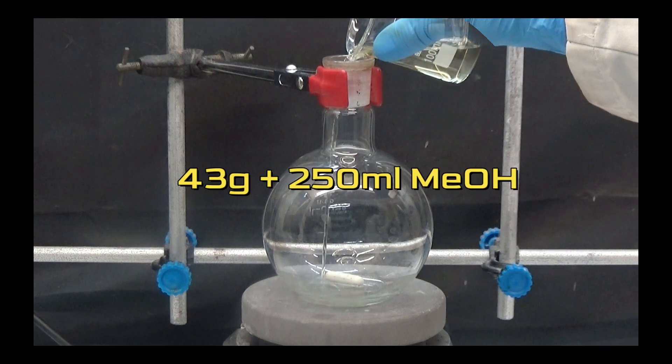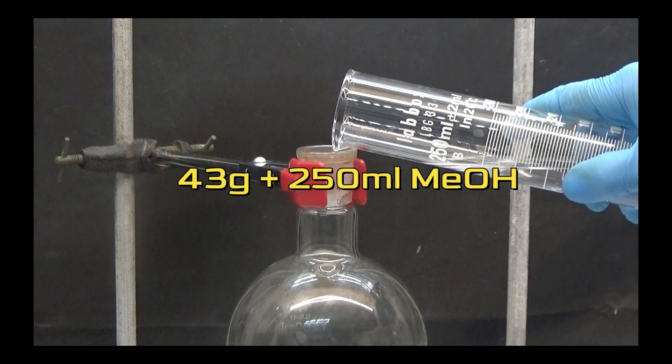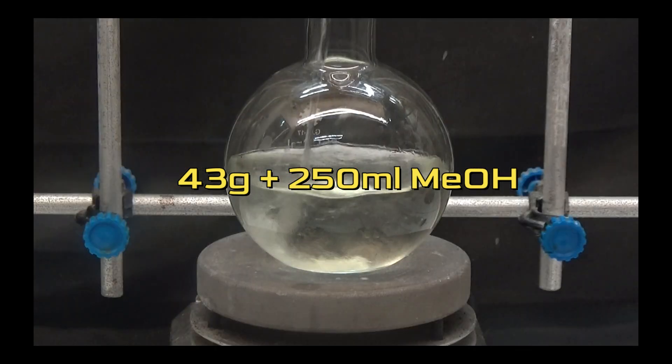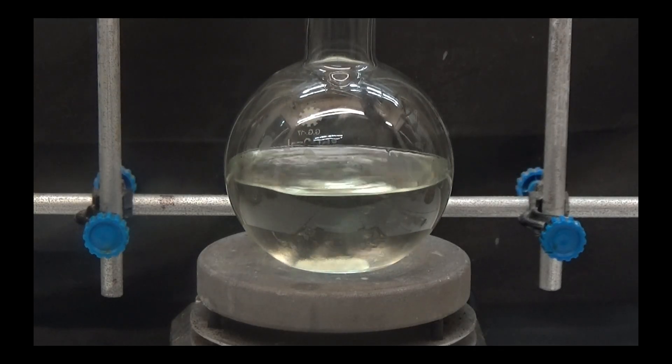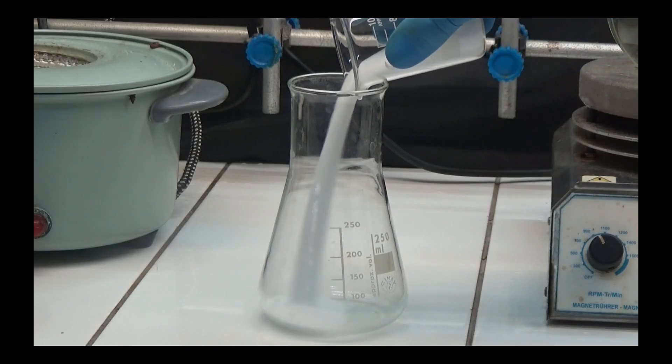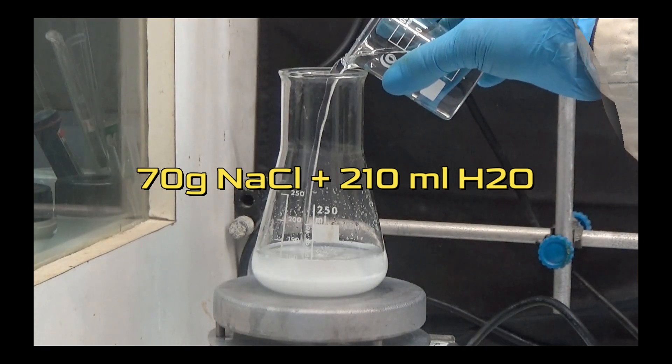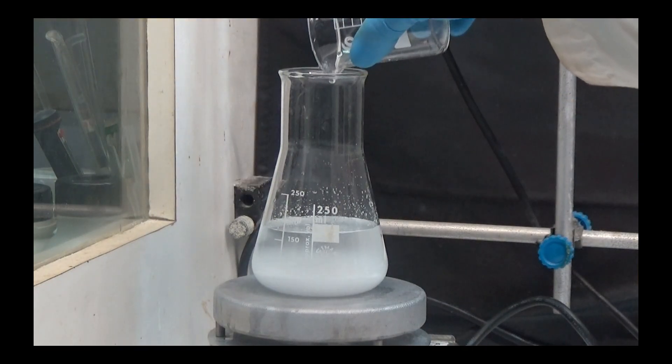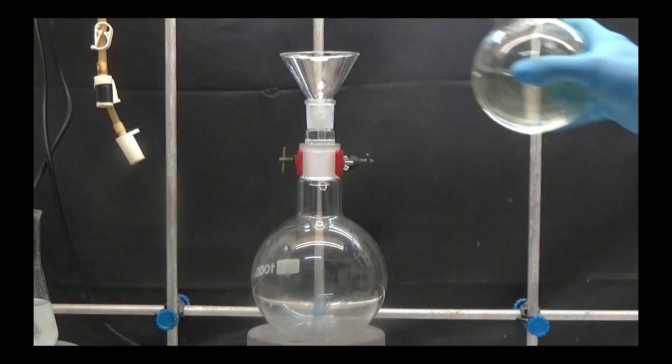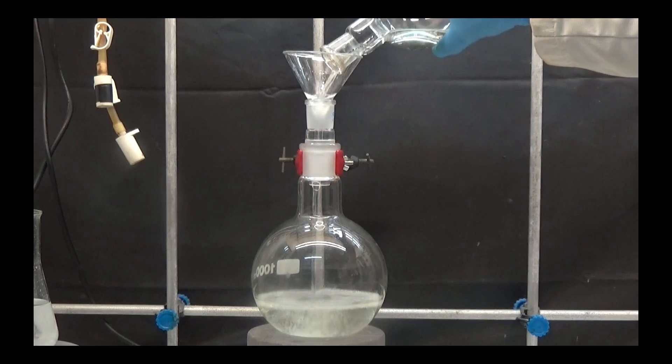In a 500 milliliters flask we added 43 grams of nitrobenzene and diluted it with 250 milliliters of methanol. In another flask we dilute 70 grams of sodium chloride with 210 milliliters of water. A 1000 milliliters flask is used to mix the two solutions.